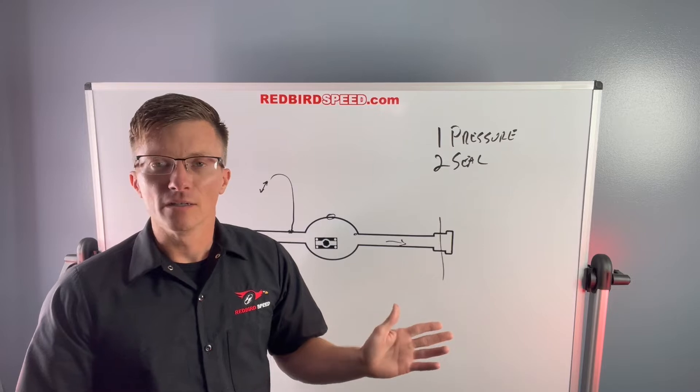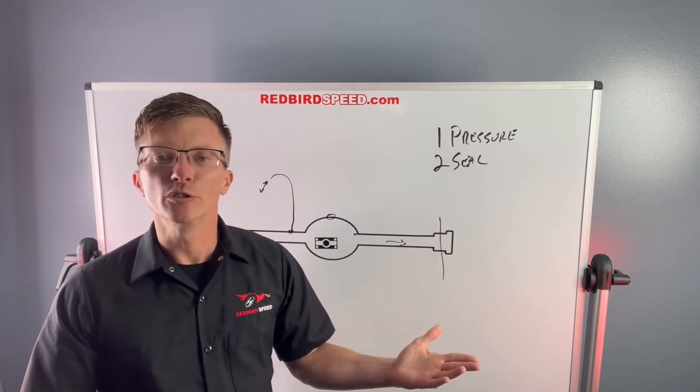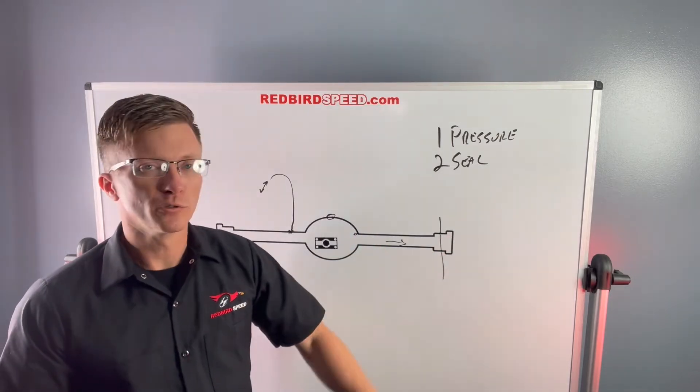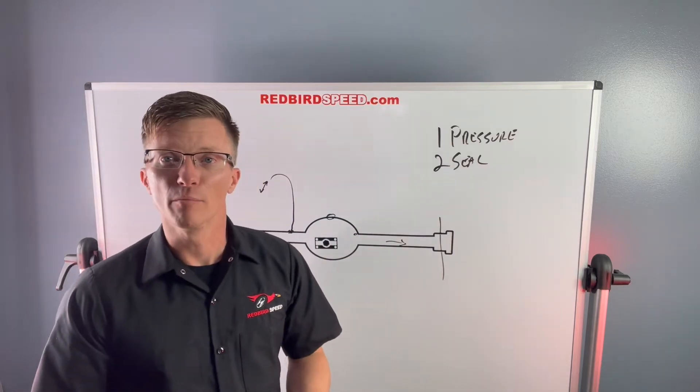Another option would be like a Set 20 bearing with a lip seal that goes on. Set 20 would be like a two-piece bearing. So there's a lip seal that goes on. That actually seals from the outside and the gear oil actually goes up the tube and lubricates that bearing.